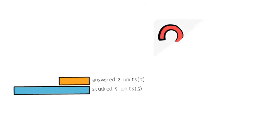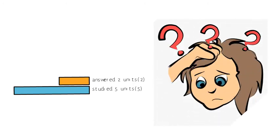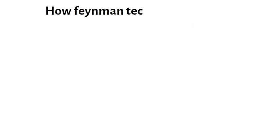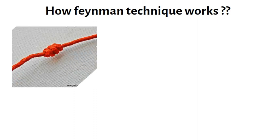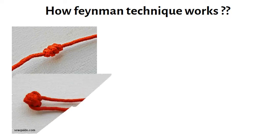If you study 5 units for the exam, you might only be able to recall 2 units. What actually stays in your brain is about 3 units.